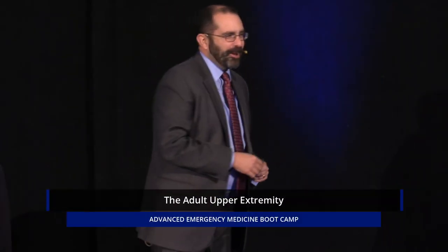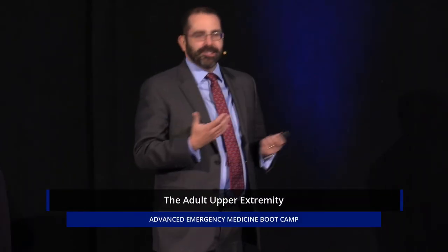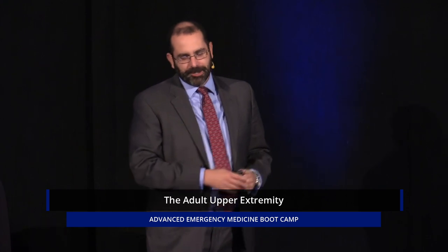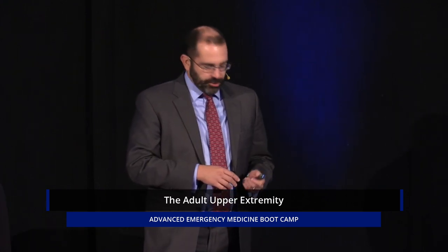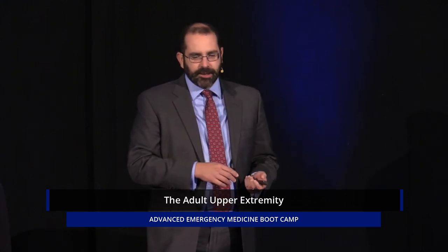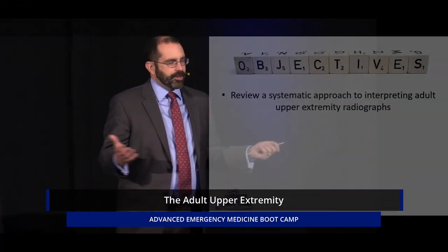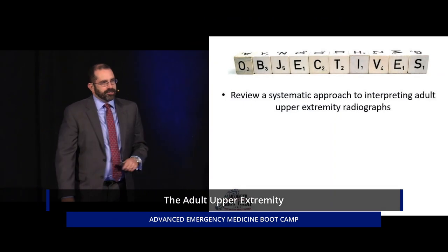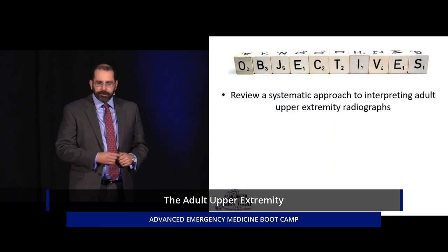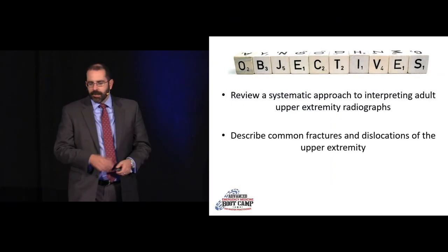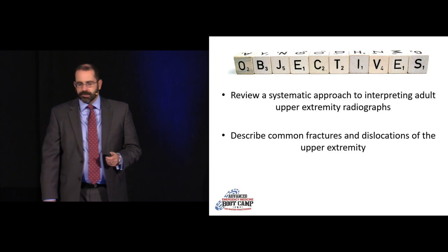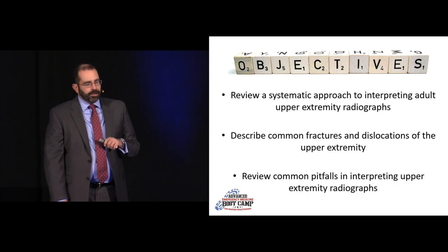We're going to move on to adult upper extremity radiographs. The same objectives apply: we're going to talk about a systematic way to do it — ABCS — and we're going to discuss some of the common fractures, dislocations, and common pitfalls.